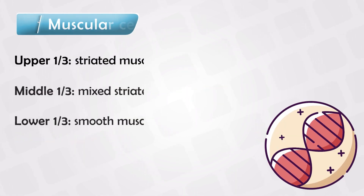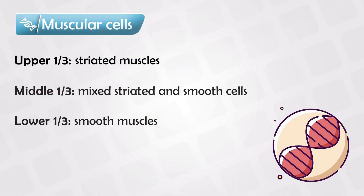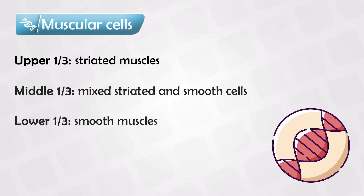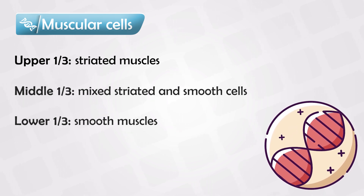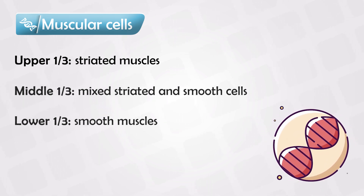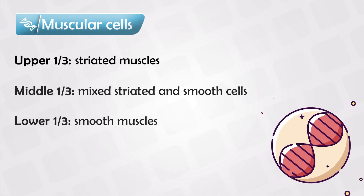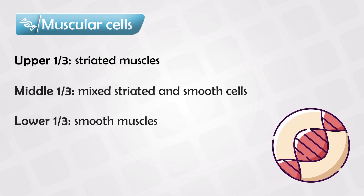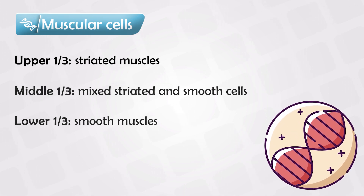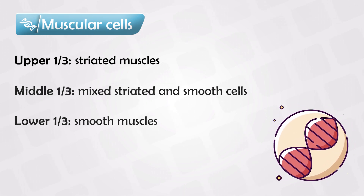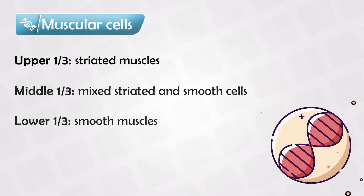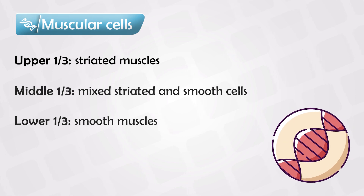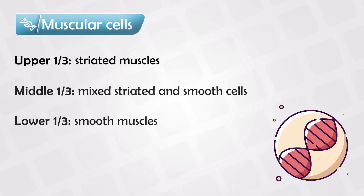When it comes to the types of muscle in the esophagus, the upper part has striated muscles, the lower has smooth muscles, while the middle has both smooth and striated muscles. Keep in mind, the esophagus does not have a serosa.